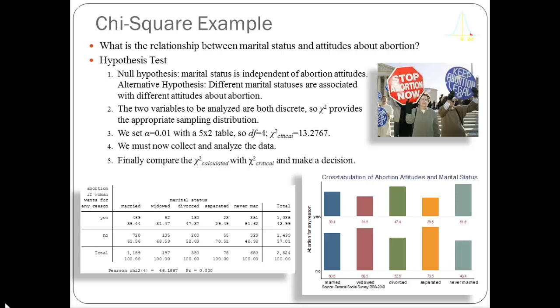So our conclusions: number one, there's a statistically significant relationship between marital status and attitudes about abortion. Number two, it appears the marital status group most favoring abortion are people who are never married, and the group least favoring abortion are the people who are separated. Number three, the magnitude of the difference ranges from about eight percentage points to almost 20 percentage points across our categories — a pretty substantive and important difference in how marital status relates to attitudes about abortion.